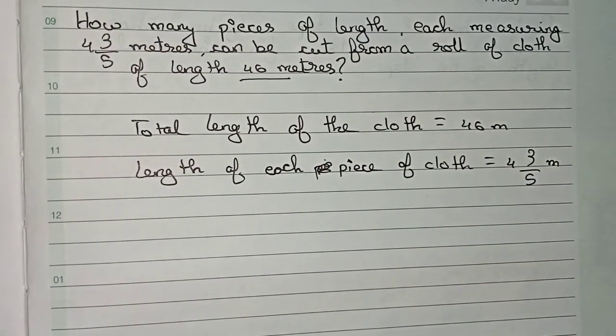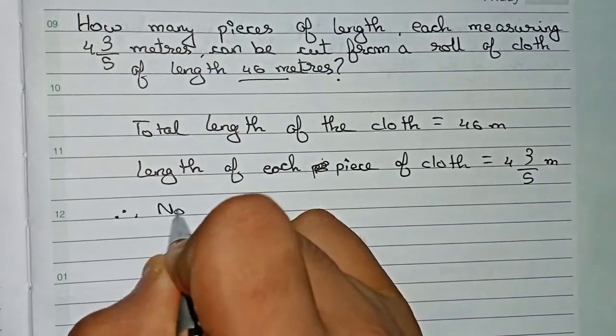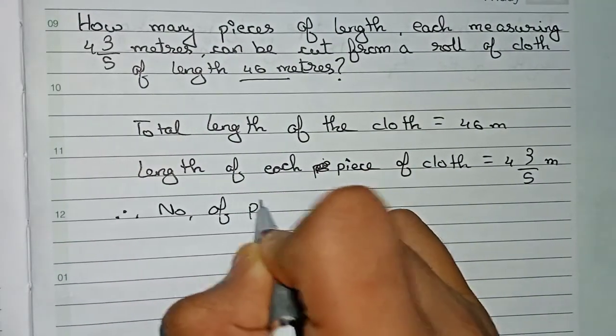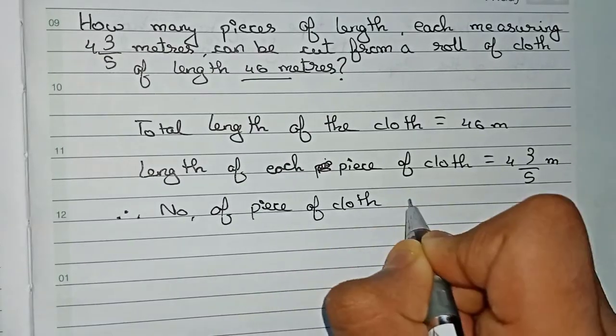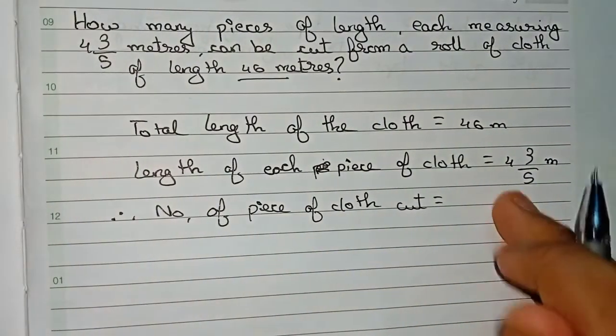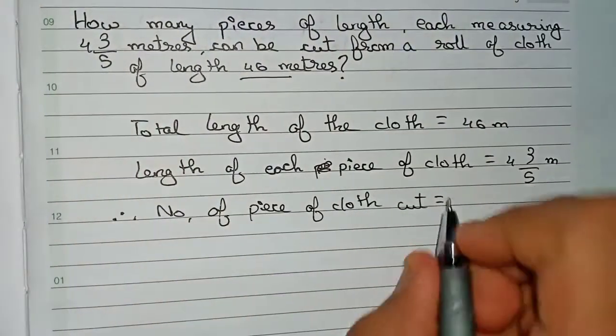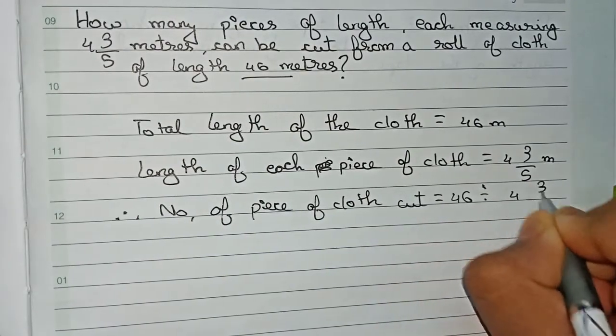Therefore, write number of pieces of cloth cut equals the total divided by the length of each cloth. So it becomes 46 divided by 4 and 3/5.